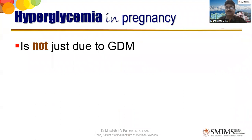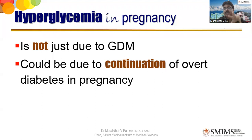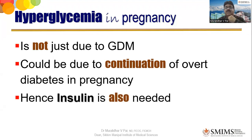Because OADs do not stimulate the fetal pancreas, they avoid hyperinsulinemia-driven macrosomia. Hyperglycemia in pregnancy could be due to continuation of overt diabetes — ODM — in which case sugars should be well controlled before advising pregnancy. ODM patients will quickly enter GDM mode when they become pregnant because they already have some insulin depletion, and additional insulin resistance is added in pregnancy, making them worse. Hence insulin is also needed for them. About 30 percent of patients started on metformin will eventually require additional insulin.